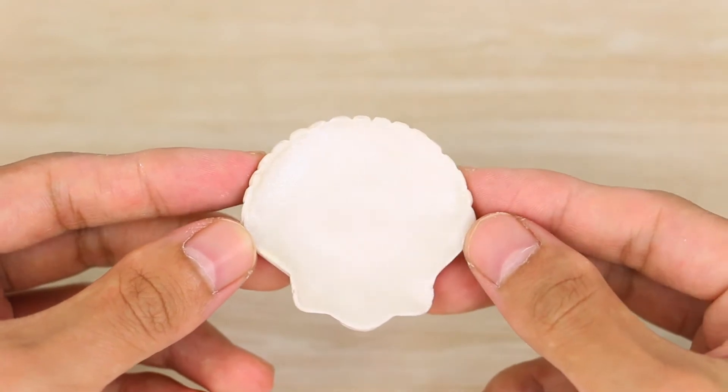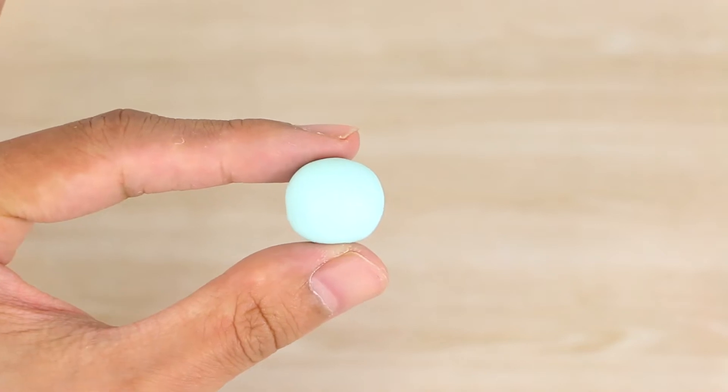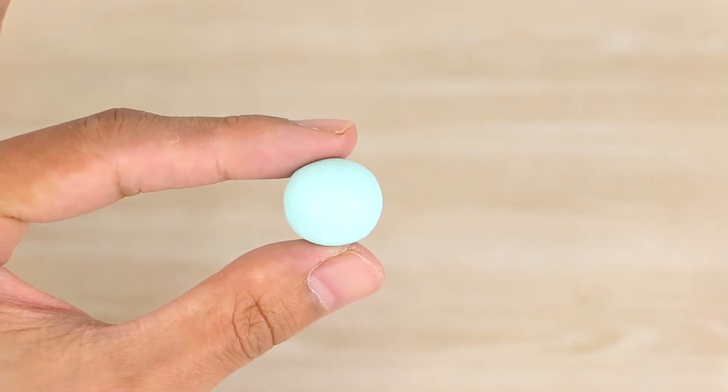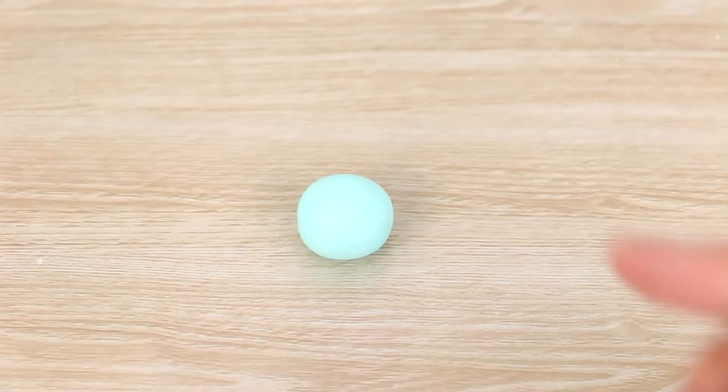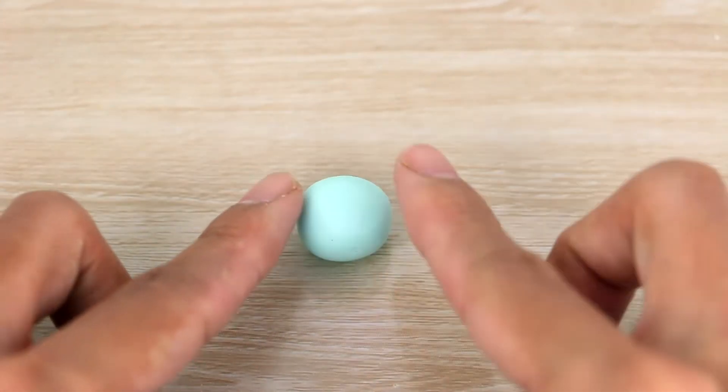Now I'm just gonna place that aside and work on the jellyfish. For that, I have a big bowl of some mint clay. I'm just gonna place that onto my work surface and press it down a little bit so that the back becomes flat.